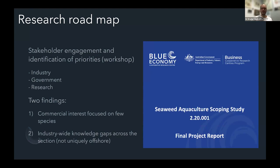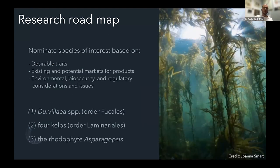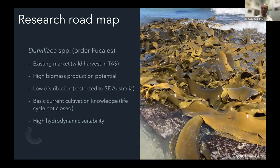Following from this, a few species were nominated based on desirable traits: can they withstand offshore conditions, is there an existing and potential market, and what are the environmental, biosecurity, and regulatory considerations? Based on this, we highlighted three groups — basically six species. One is Durvillaea. Then there were four kelp species identified, and then Asparagopsis taxiformis, because of the recent interest in this species.